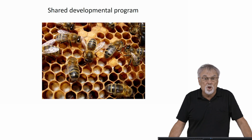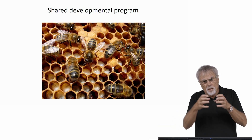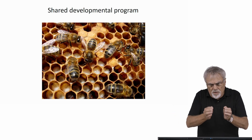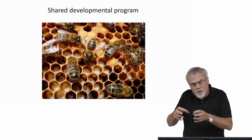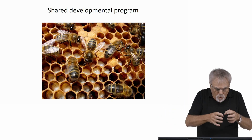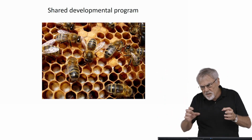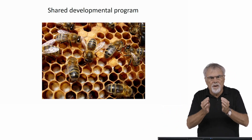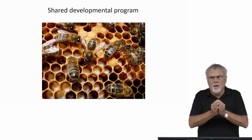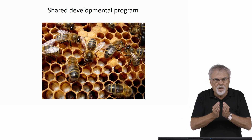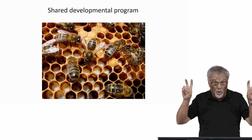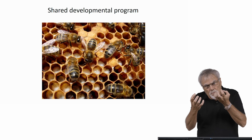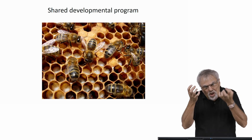The developmental program is shared. The larva runs a developmental program — a genetic program taking it through different larval instars — and they go through these stages and end up being a worker or a queen. The workers are feeding the larvae, the larvae are taking the food in, and the overall program that results is shared between the two.